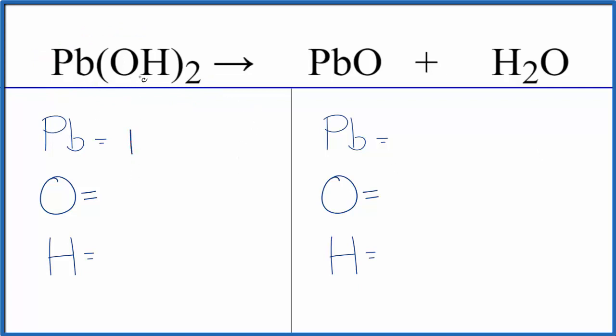We have one lead, and then for the oxygen we have one, but this two goes to everything here. So two times one gives us two oxygens, and two times one gives us two hydrogen atoms.